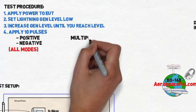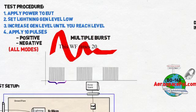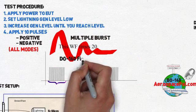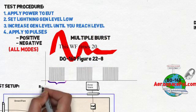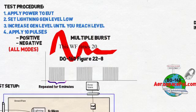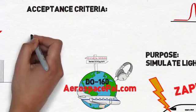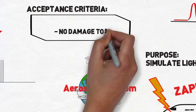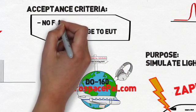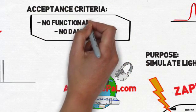Now, multiple bursts is a little bit different. You're going to apply the burst application specified by the figure below every 3 seconds, lasting continuously for 5 minutes. Unlike pin injection, this test evaluates the functional upset as well as the damage tolerance. Monitor your EUT during this test and ensure that you pass.